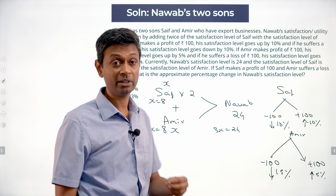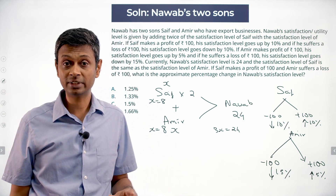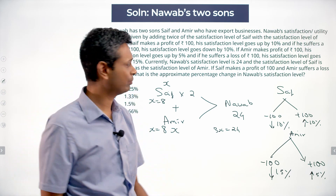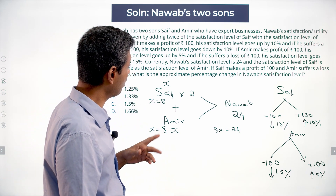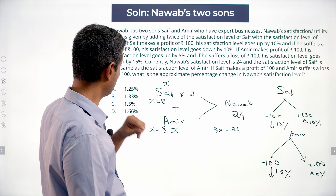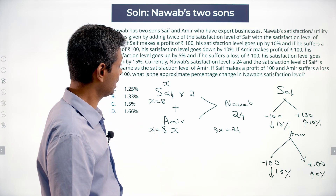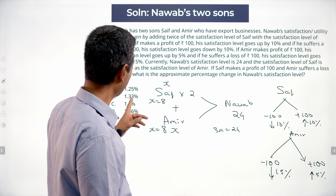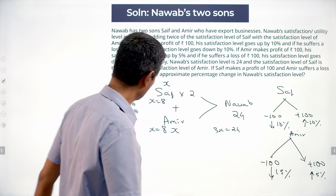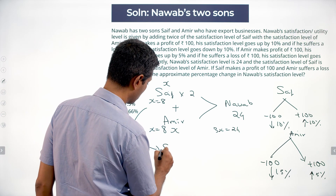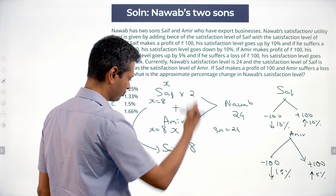Saif is at a level of 8 and Ameer is at a level of 8. Now, Saif makes a profit of 100 and Ameer suffers a loss of 100. What is the approximate percentage change in Nawab's satisfaction level? Saif makes a profit of 100, that means he is up 10%, so Saif will go to 8.8.